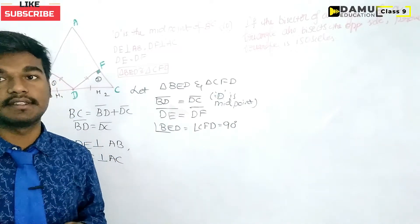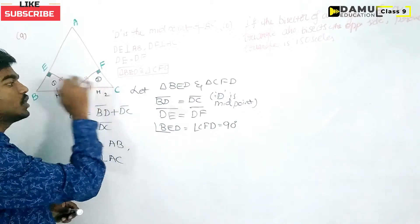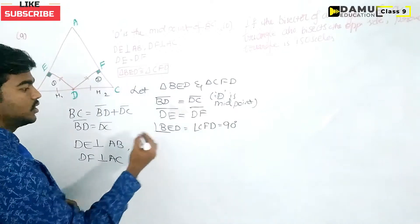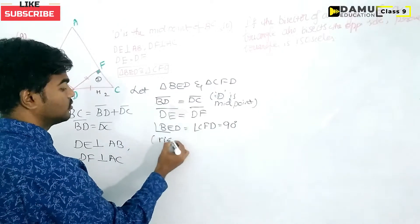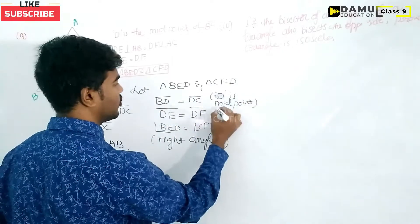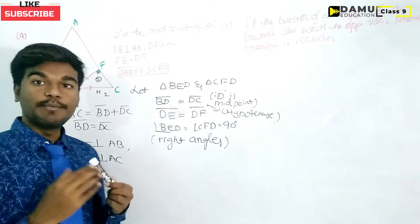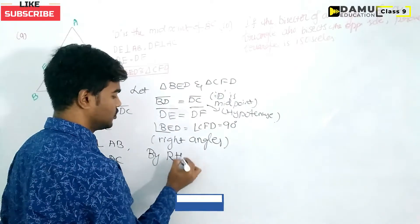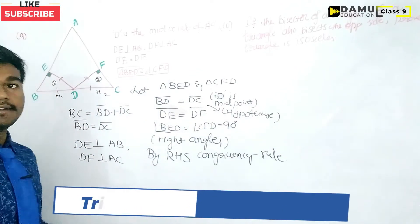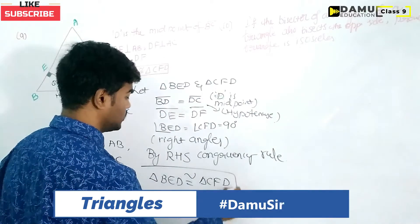The applicable congruency rule here is RHS — Right angle, Hypotenuse, Side. The hypotenuse in triangle BED is BD, and in triangle CFD is DC. DE and DF are the equal sides. By the RHS congruency criterion, triangle BED is congruent to triangle CFD.